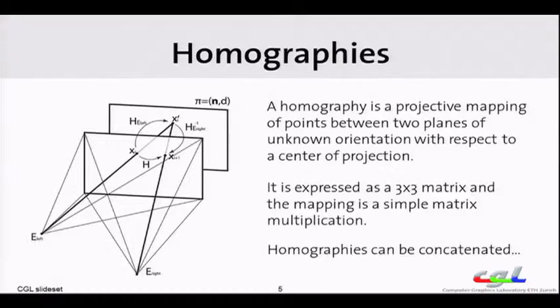Homographies are also invertible, so if there exists a mapping from front layer to back layer, there also exists a mapping from back layer to front layer which is simply the inverse of the matrix. So we can map this point back to the front layer by using the homography defined by the other eye.